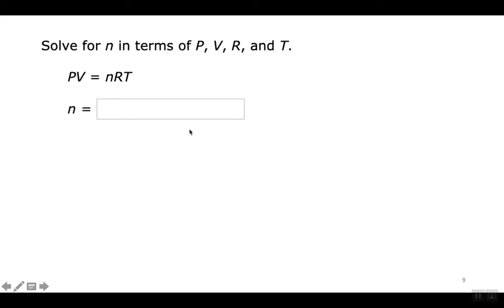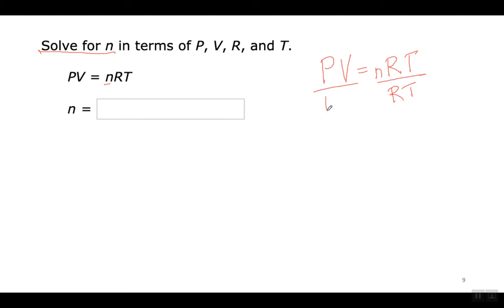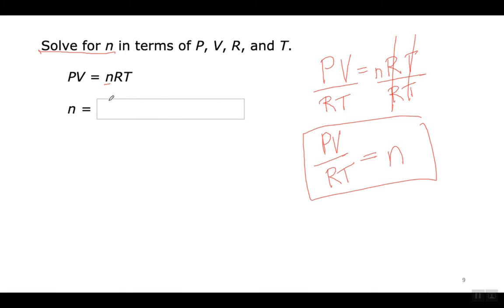Here's another one — solve for N. This is all multiplication, so the opposite is division. Since I want N by itself, I divide both sides by RT. RT cancels out on the right side and that's my answer. Once you get the hang of it you can do a lot of these in mental math. You can write the answer as a fraction or in parentheses form — both are correct.